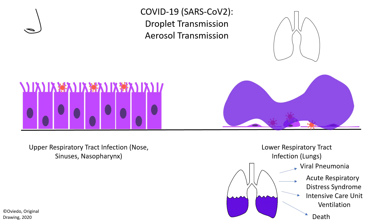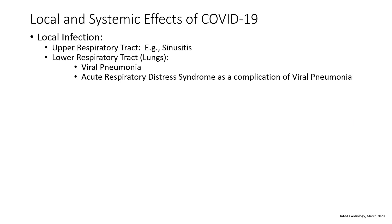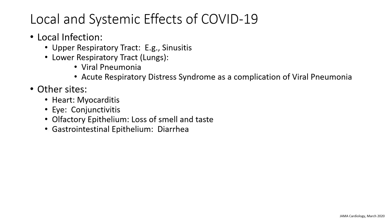Now that we've discussed processes in the airway, I want to cover some other disease processes. We just finished discussing local infection — upper respiratory tract infection such as sinusitis, and lower respiratory tract infection including viral pneumonia and acute respiratory distress syndrome. Other sites that can also get infected include the heart — for example, myocarditis. This probably occurs when local infections become more severe and the virus enters the blood, allowing it to access the heart and cause myocarditis.